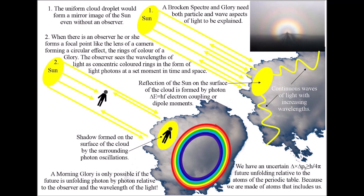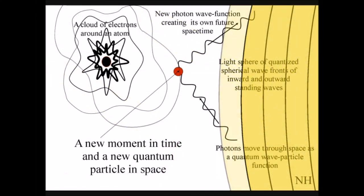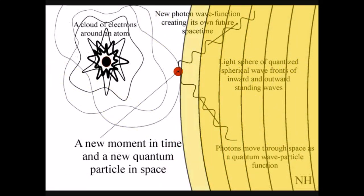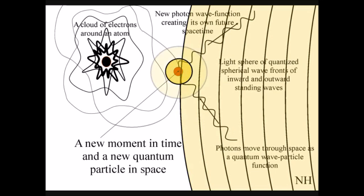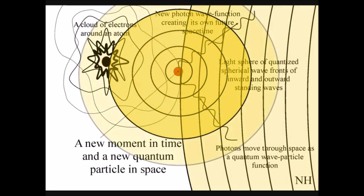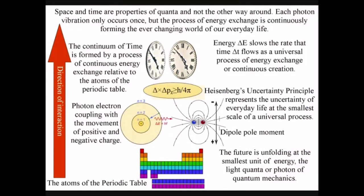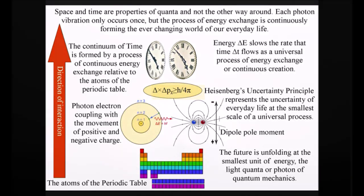This is possible because the wave-particle duality of light and matter in the form of electrons are forming a blank canvas that we can interact with. This gives us the potential to form the possible into the actual, as the future unfolds photon by photon. Nothing supports this idea better than how the individual observer becomes the focal point of a process of energy exchange that forms the glory of the brocken spectre.